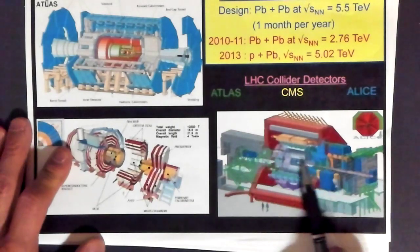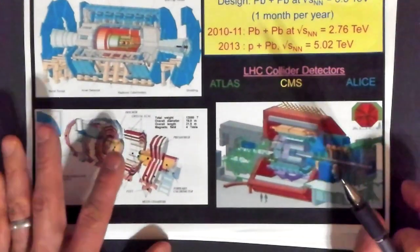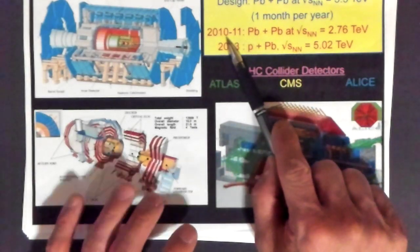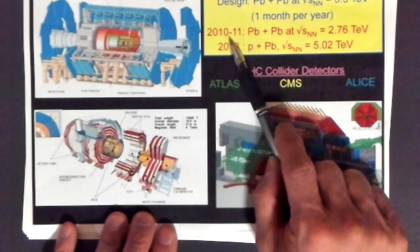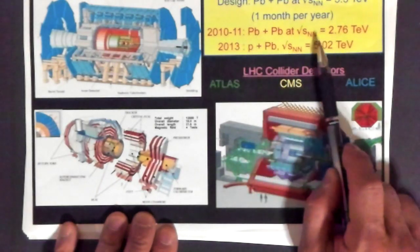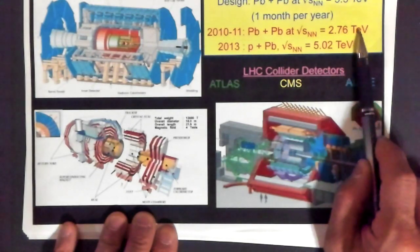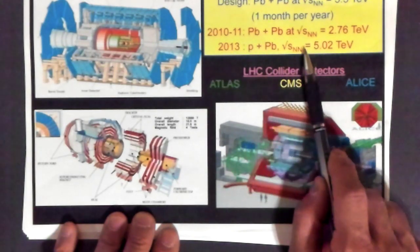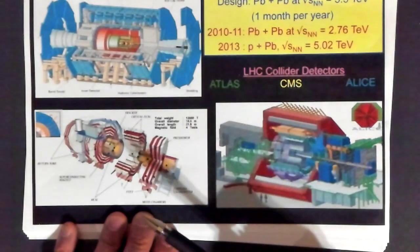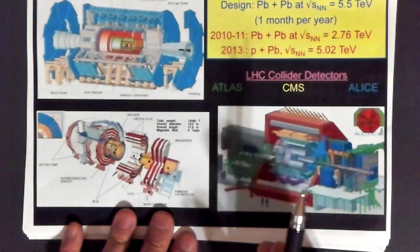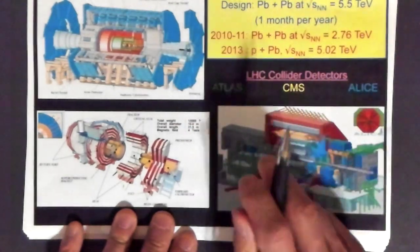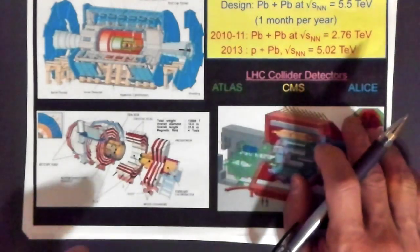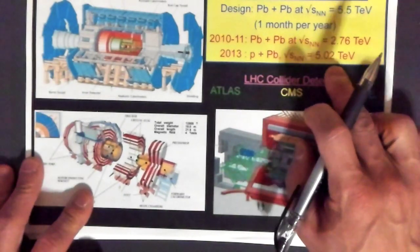ALICE is pictured here, and ALICE is designed specifically for heavy ion collisions. When the LHC program turned on, they were doing lead-lead collisions at about 2.76 TeV. In 2013, they went to proton-lead at about 5.02 TeV, and then in 2015, they did lead-lead at nucleon-nucleon energies of 5.02 TeV.